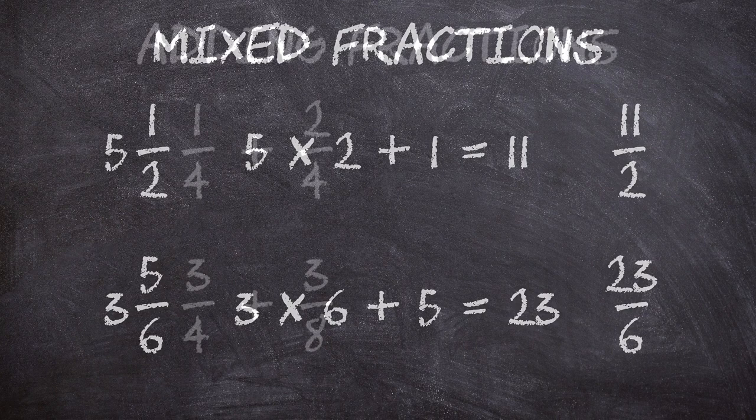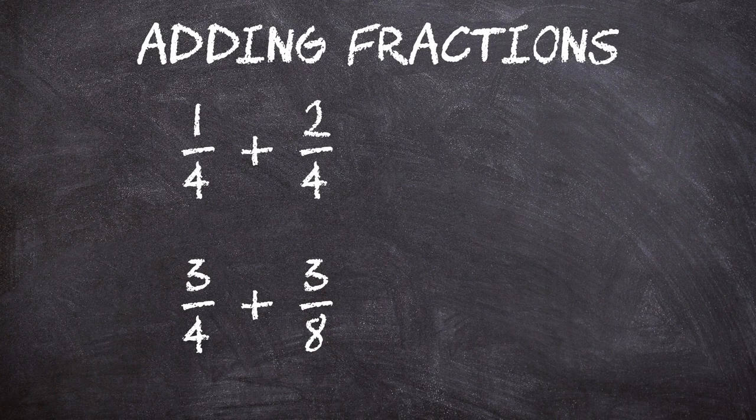So what about adding fractions together? The only rule we have to remember when adding fractions is that the denominators must be the same. So for the first one, one-quarter plus two-quarters, we can see that the denominator four is the same. All we have to do is add the numerators together and keep the same denominator. So one-quarter plus two-quarters equals three-quarters.